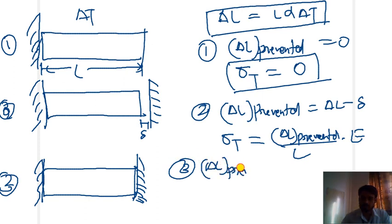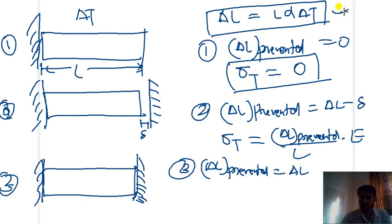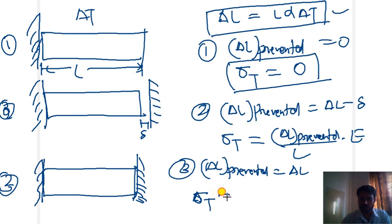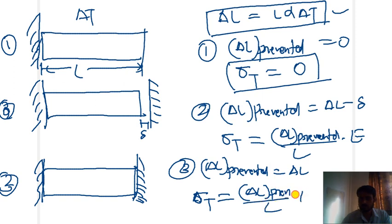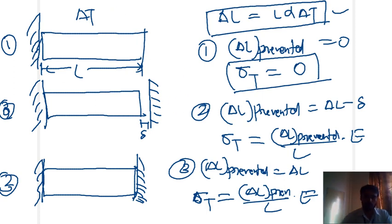In case three, both ends are restricted so the total amount of change due to temperature will be prevented. So delta L prevented equals delta L — the total change in length is the prevented delta L — and we can calculate thermal stress as delta L prevented divided by L into E. Only the temperature stress due to that particular prevented expansion will produce.